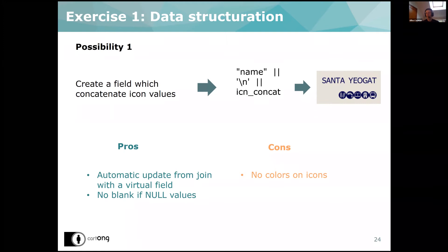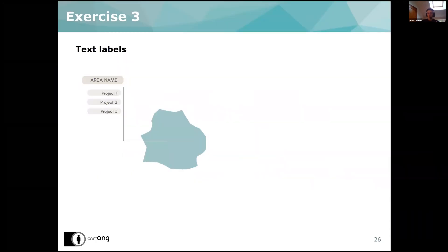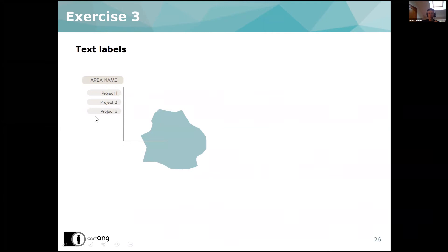Now we would like to make the second type of label: text labels. Same as before, we would like to have our area name and below it the name of each project in the area. I'll give you a few minutes to try this on your own in QGIS.